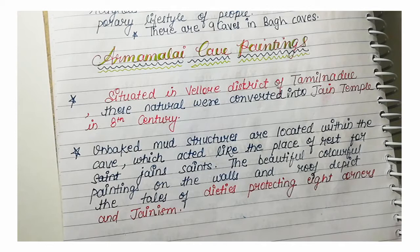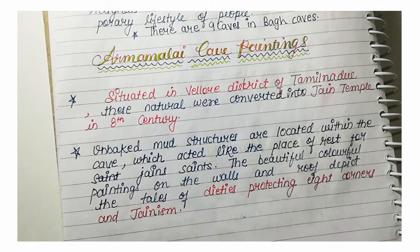Next is Arma Malai Cave Paintings, situated in the Vellore district of Tamil Nadu. These natural caves were converted into Jain temples in the 8th century. Unbaked mud structures are located within the cave, which acted as resting places for Jain pilgrims.